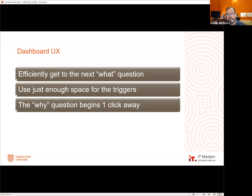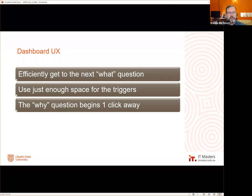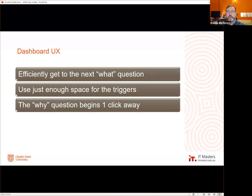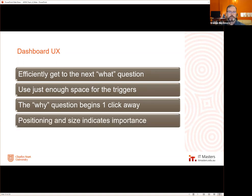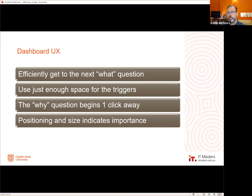You don't need to immediately answer why something is only 50% — you just need to know it's a question requiring investigation, then blow up the chart, change filters, or look at it differently. That might be a click or two. Positioning and size of an element reflects its importance and the job it needs to do to answer the 'what' question. Color typically indicates urgency or severity.